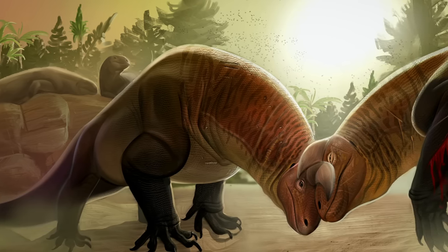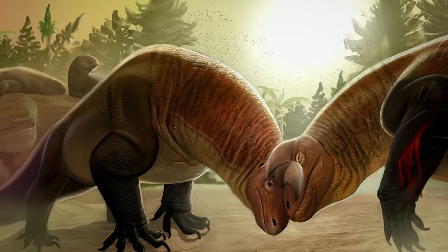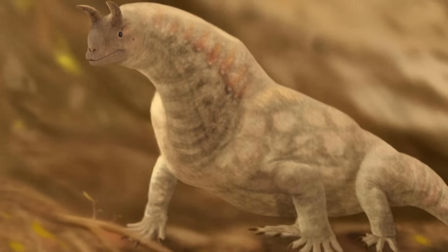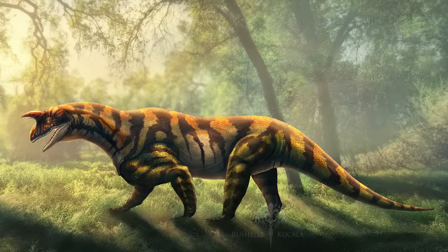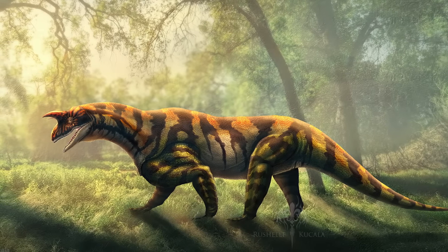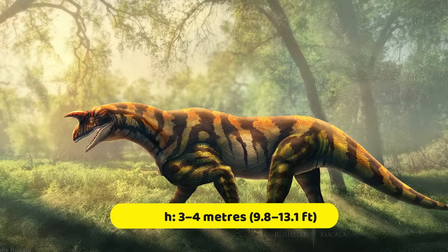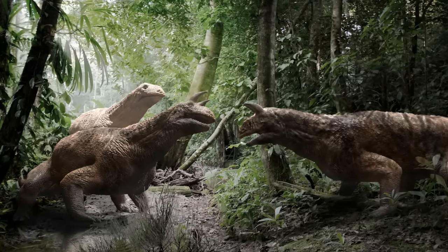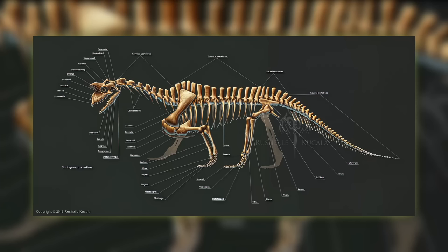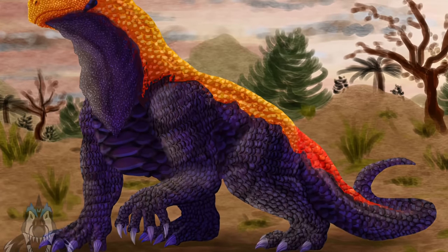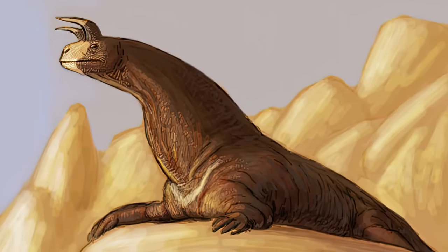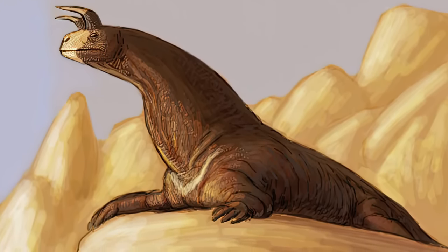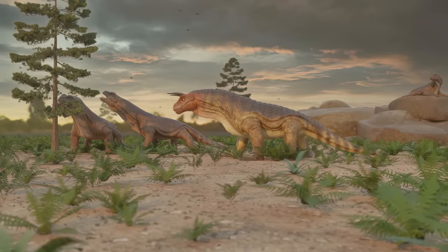Shringasaurus, meaning horned lizard, is an extinct genus of archosauromorph reptile from the Middle Triassic of India. It is known from the type and only known species Shringasaurus indicus. Shringasaurus was a large-bodied quadruped with an estimated body length of 3–4 meters, or 9.8–13.1 feet. Like some ceratopsid dinosaurs, Shringasaurus had two large horns over its eyes that faced up and forwards from its skull. It also bears convergent physical similarities to sauropodomorph dinosaurs, such as its long neck, shoulders, forelimbs, and the shape of its teeth. Its describers considered the horns to be likely products of sexual selection, not primarily for defense or species recognition.